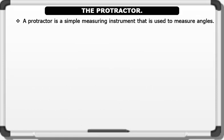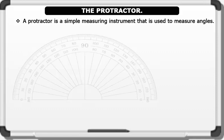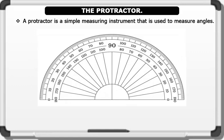3. The protractor. A protractor is a simple measuring instrument that is used to measure angles. Below is the image of a protractor. A common protractor is in the shape of a semi-circle with an inner scale and an outer scale, with markings from 0 to 180 on it.